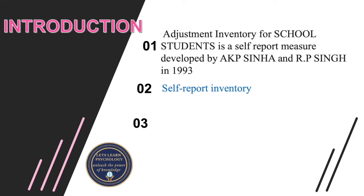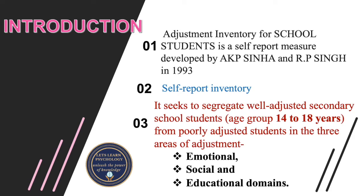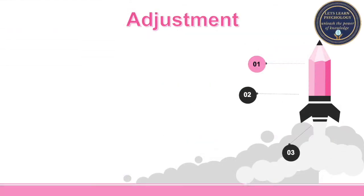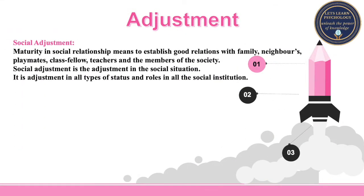It is a self-report inventory and it seeks to segregate well-adjusted secondary school students in the age range of 14 to 18 years from poorly adjusted students in three areas of adjustment: emotional, social, and educational domains.